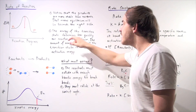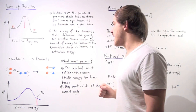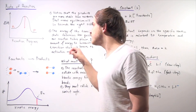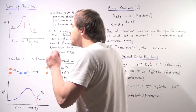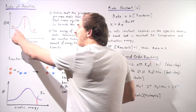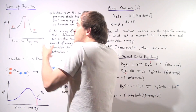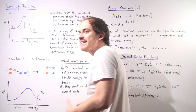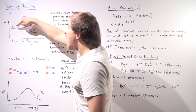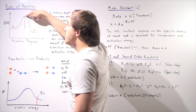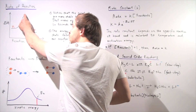The energy of the transition state determines how quickly our reaction takes place. The amount of energy to surmount the transition state is known as the activation energy. In other words, the only way that reactants will actually become products is if the reactants gain enough energy to surmount, to climb this activation barrier, to reach the transition state.